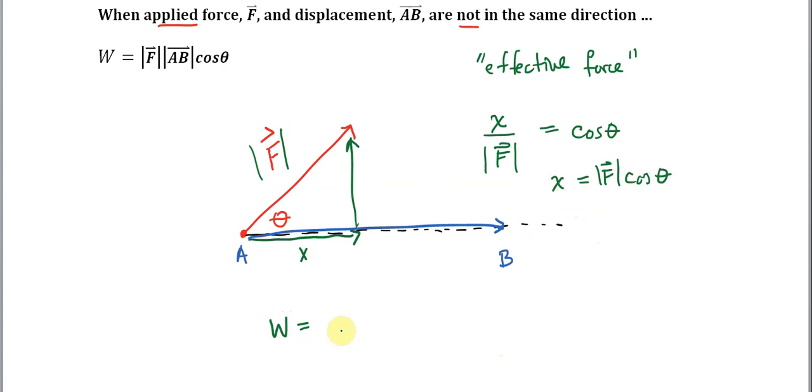Solving for this, we get that X is equal to the magnitude of F times the cosine of theta. Now the work done is equal to the effective force, which in this case is X, multiplied by the displacement, which is the magnitude of AB. Making our substitution, that's what this is equal to.